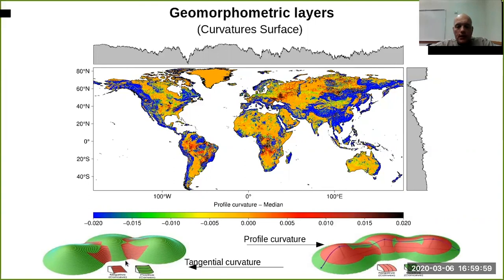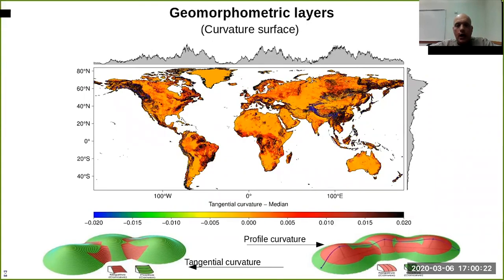The tangential curvature represents the horizontal change while the profile curvature represents the vertical profile change. You can see that the areas with the highest level of profile and tangential curvature are the mountain areas.